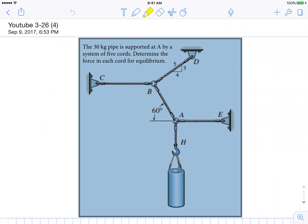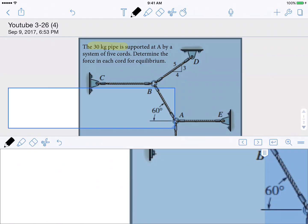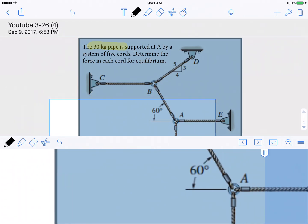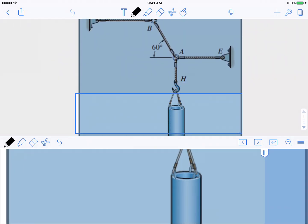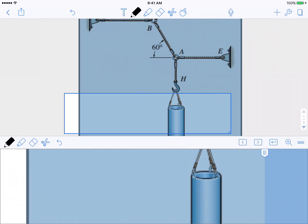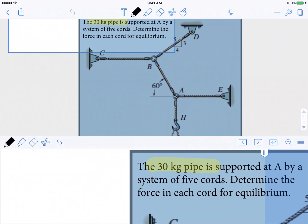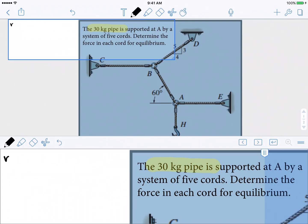Sometimes as a student you wonder where to get started, and here's where I recommend you always get started. You get started by reading what you're given. In this problem we've been given that the load on this pipe is related to the fact that the mass is 30 kilograms. Our first step is we need to turn this into a load, turn this into a force.